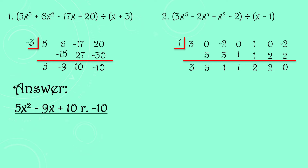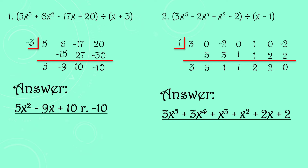We have no remainder since the last value is 0. The degree of the dividend is 6, so minus 1 gives the quotient degree of 5. Our final answer is 3x⁵ + 3x⁴ + x³ + x² + 2x + 2, with no remainder. That's how easy it is to divide a polynomial using synthetic division.